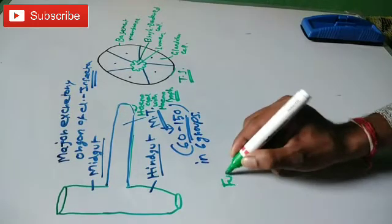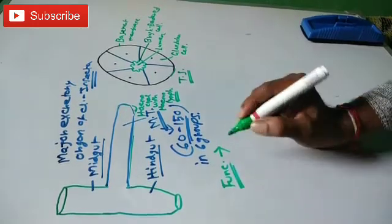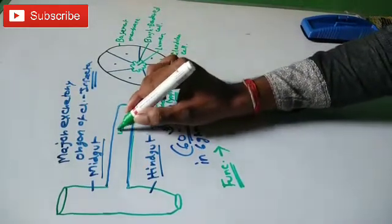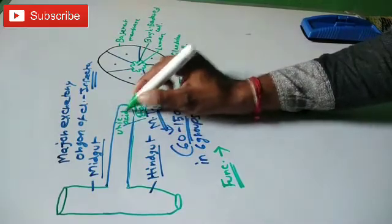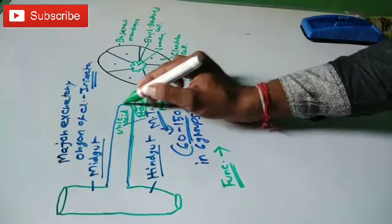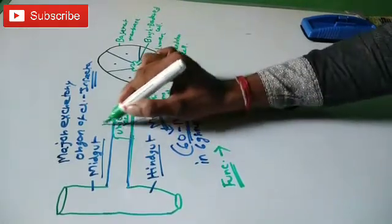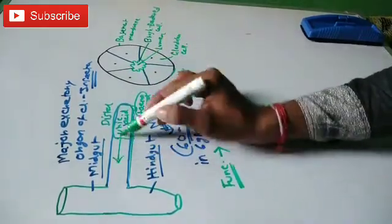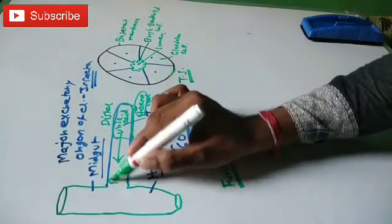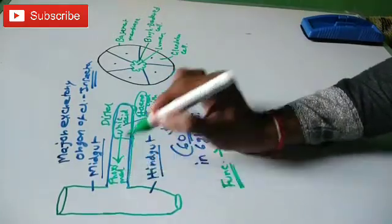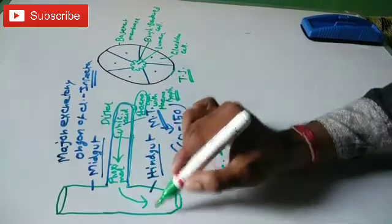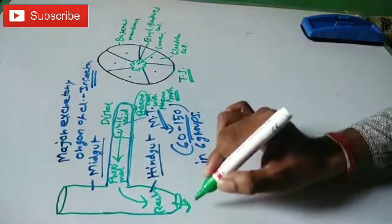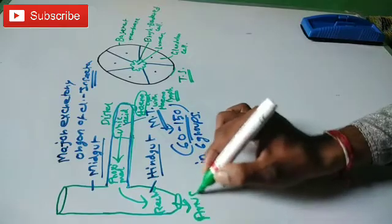The function of the Malpighian tubules: from the hemocoel, uric acid enters the distal region of the Malpighian tubules. Then it passes to the proximal region of the Malpighian tubules, then to the rectum, and ultimately it is excreted through the anus.